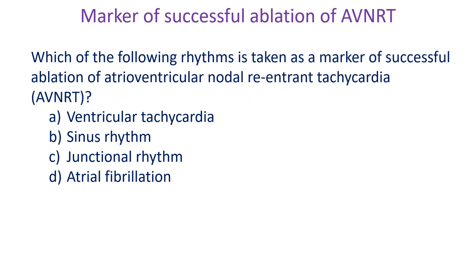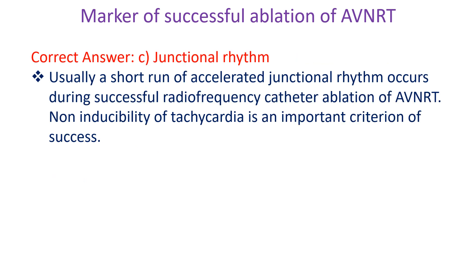Which of the following rhythms is taken as a marker of successful ablation of atrioventricular nodal re-entrant tachycardia? A. Ventricular tachycardia. B. Sinus rhythm. C. Junctional rhythm. D. Atrial fibrillation. Correct answer: C. Junctional rhythm. Usually, a short run of accelerated junctional rhythm occurs during successful radiofrequency catheter ablation of AVNRT. Non-inducibility of tachycardia is an important criterion for success.